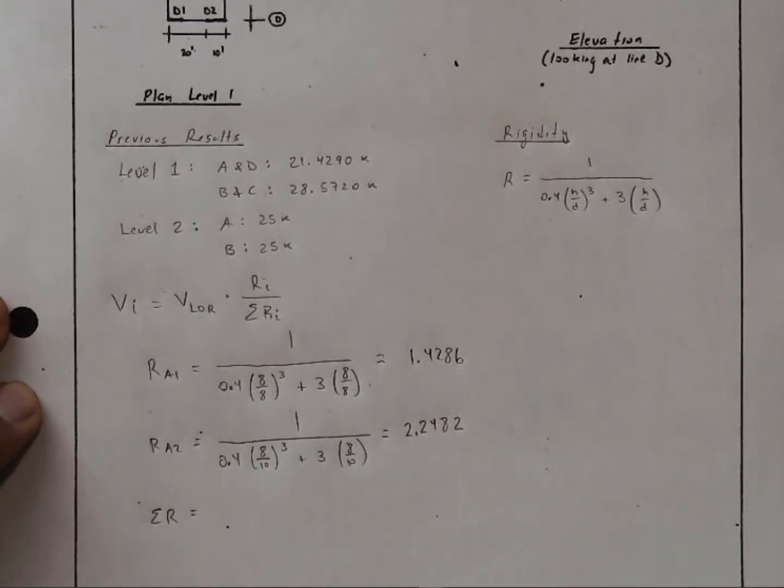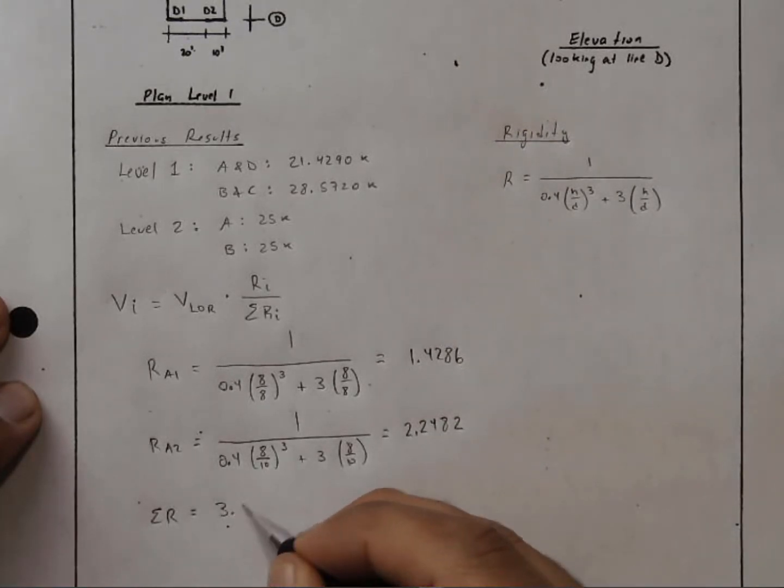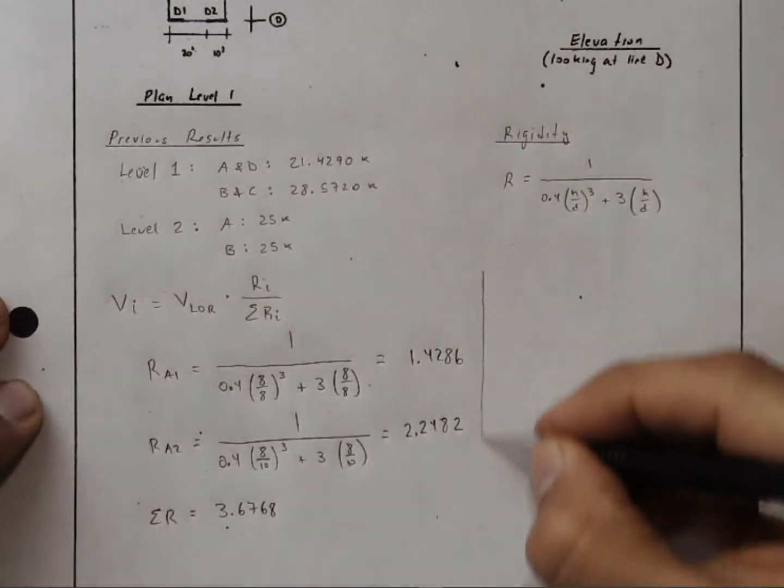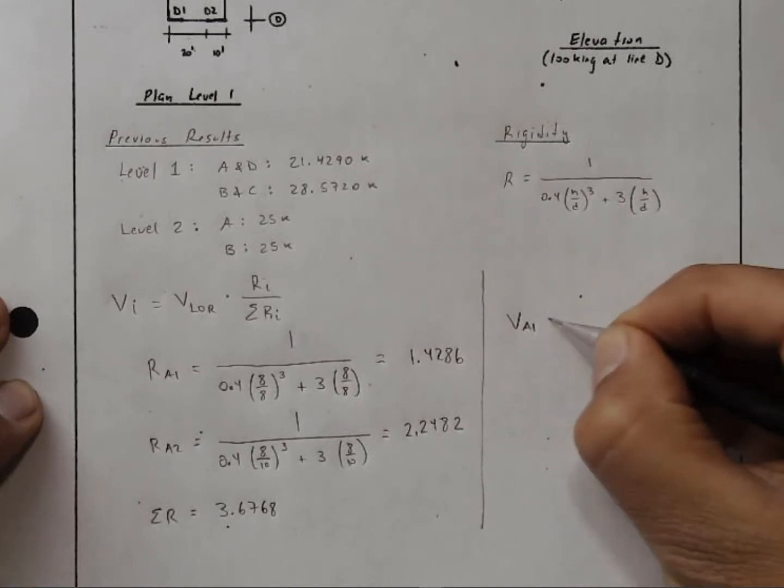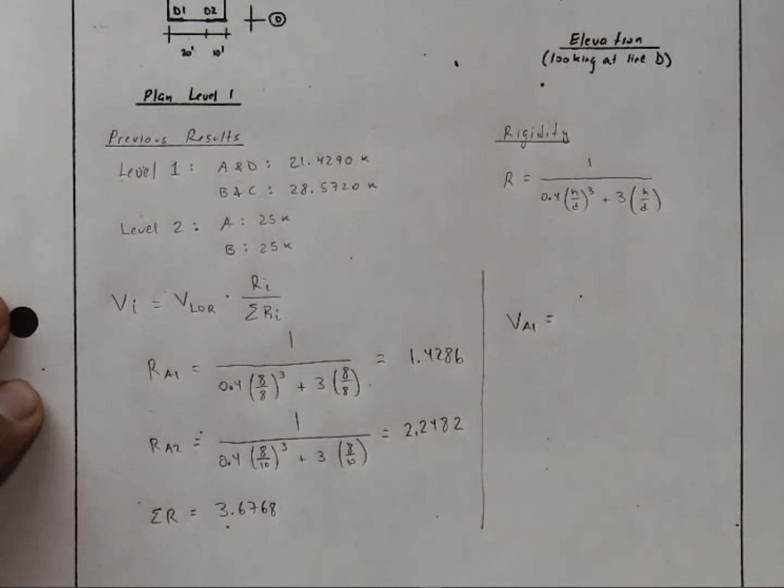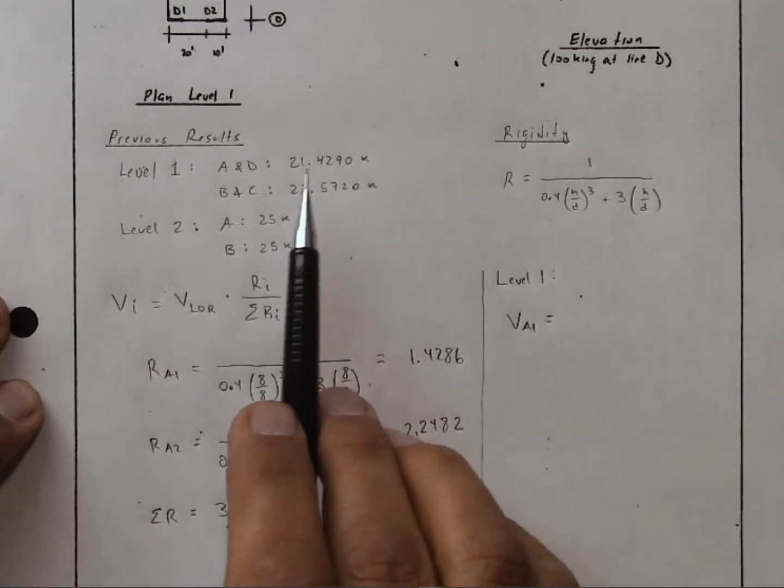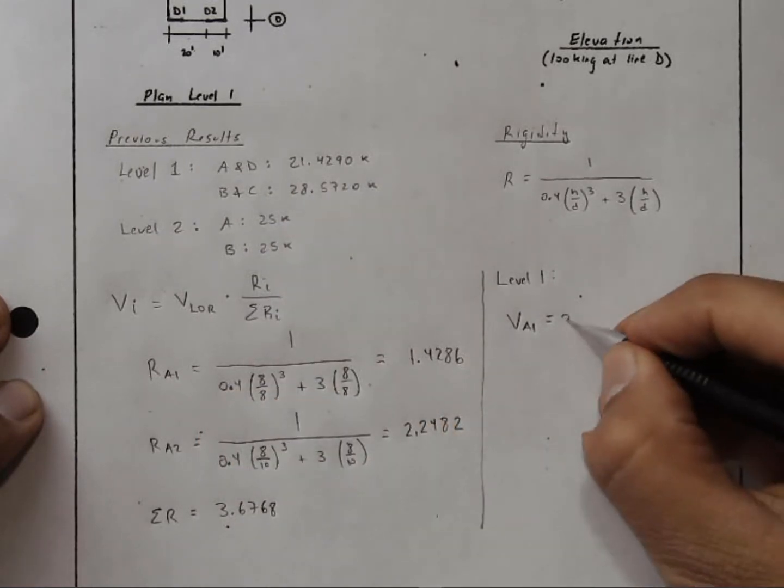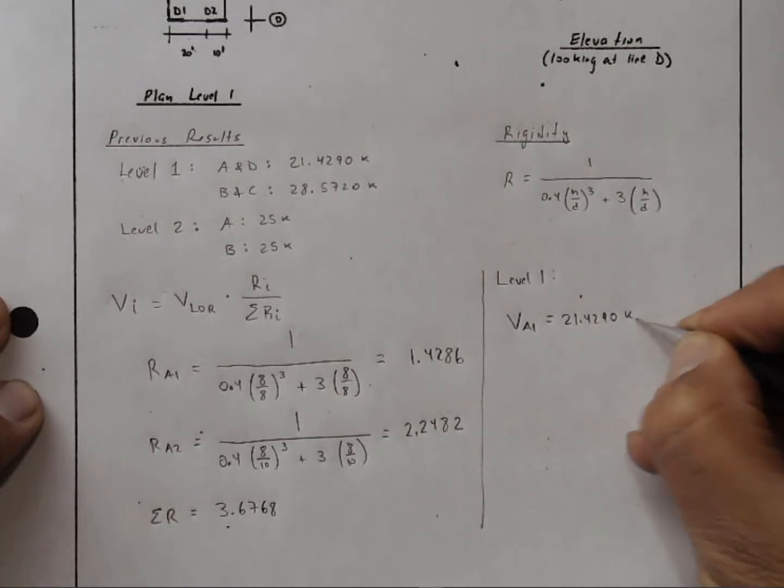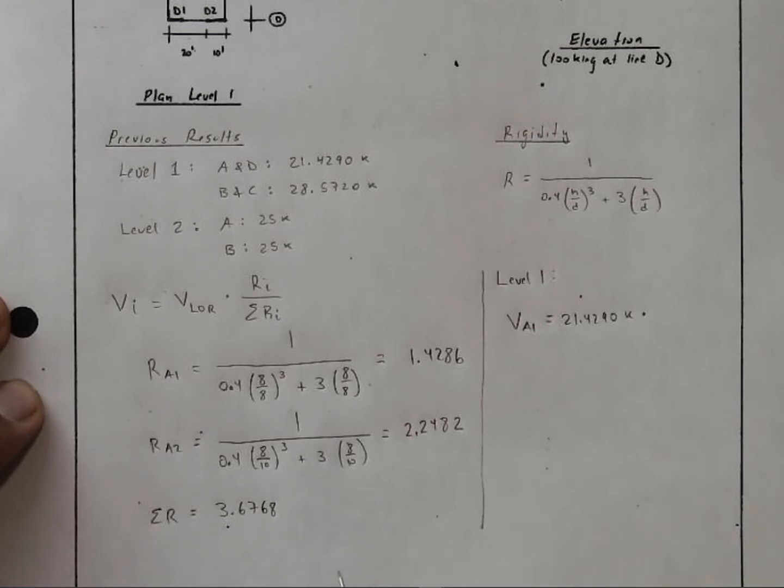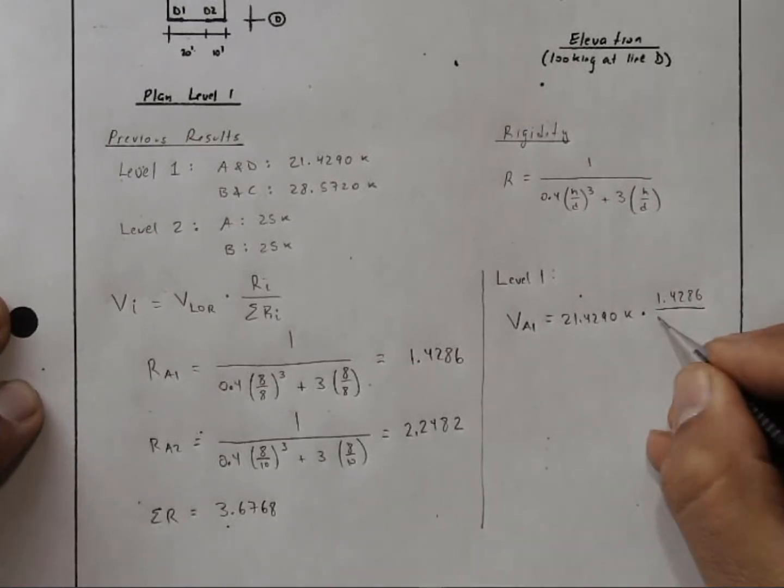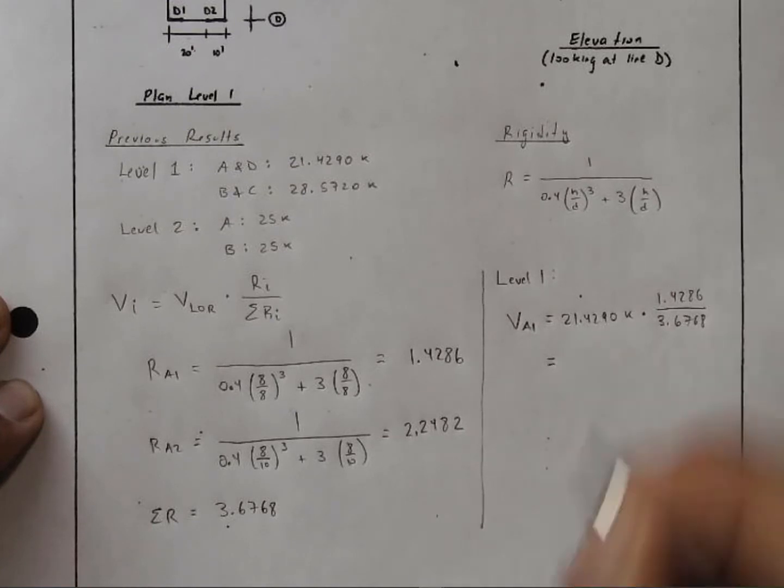So add up these two numbers and we get 3.6768. So over here we can leave ourselves a little bit of space and calculate the shear in A1 is equal to shear along the line of resistance. So we're looking at line of resistance A. We'll specify for now that we're looking at level 1. And so the force in line A on level 1 is 21.4290 kips. We're multiplying this by the rigidity of A1, 1.4286 divided by the total, 3.6768. And we can calculate that this is 8.33 kips.